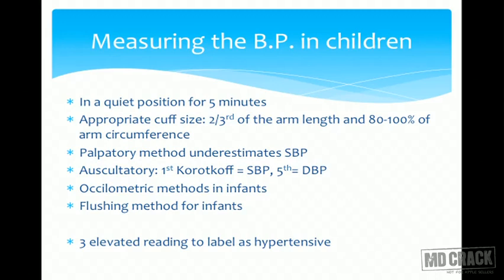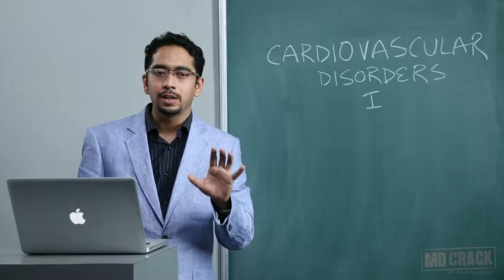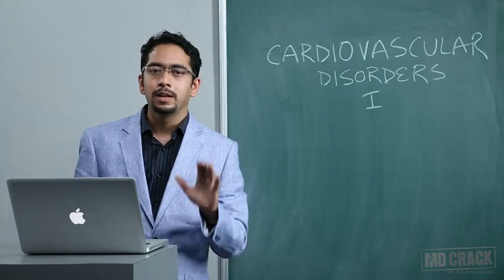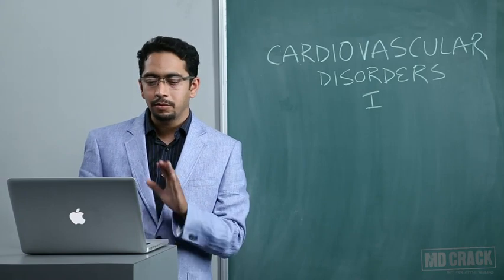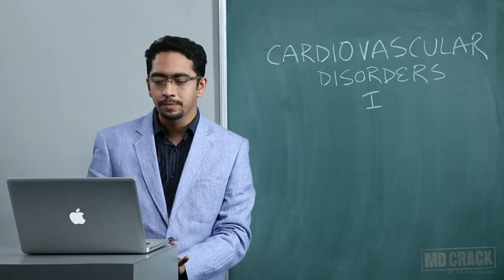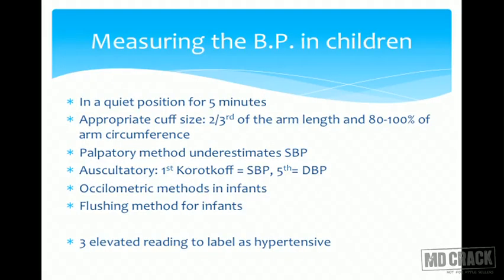Measuring blood pressure in children is often difficult as children are cranky and may not cooperate. The child should rest for some time and be allowed to acclimatize. A cuff of appropriate size must be chosen — at least two-thirds of the arm length and 80 to 100 percent of the arm circumference. The palpatory method only measures systolic blood pressure and often underestimates it. The auscultatory method is ideal; the first Korotkoff sound is taken as systolic and the fifth Korotkoff sound as diastolic blood pressure in the pediatric age group.